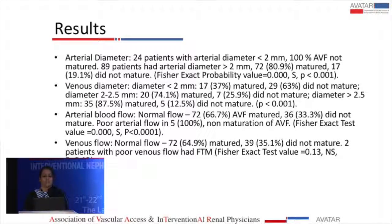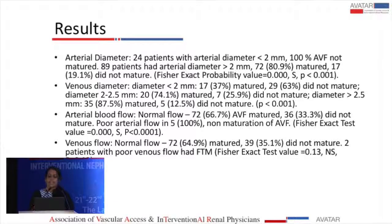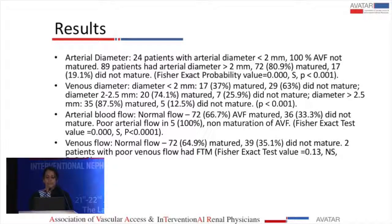In the 2 to 2.5 mm venous diameter group, 74% of fistulas matured while only 26% did not mature. In the more than 2.5 mm diameter group, 88% of fistulas matured and 12% did not mature. All values were statistically significant; however, when intergroup analysis between the 2 to 2.5 mm and greater than 2.5 mm groups was performed, there was no significant difference.